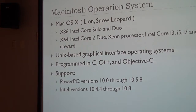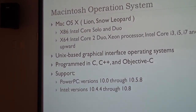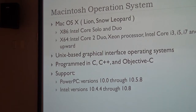I'm sorry, my mistake. So x86 is for Intel Core Solo and Duo, which is not the PowerPC. And x64 is for Intel Core 2 Duo processor, Intel Core i3, i5, i7, and upward.